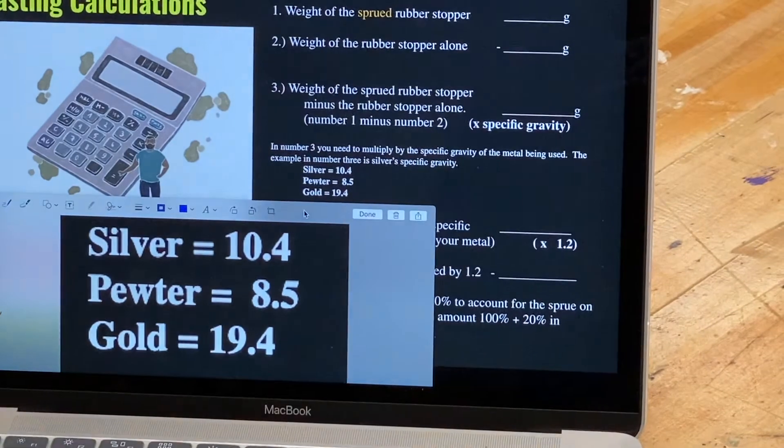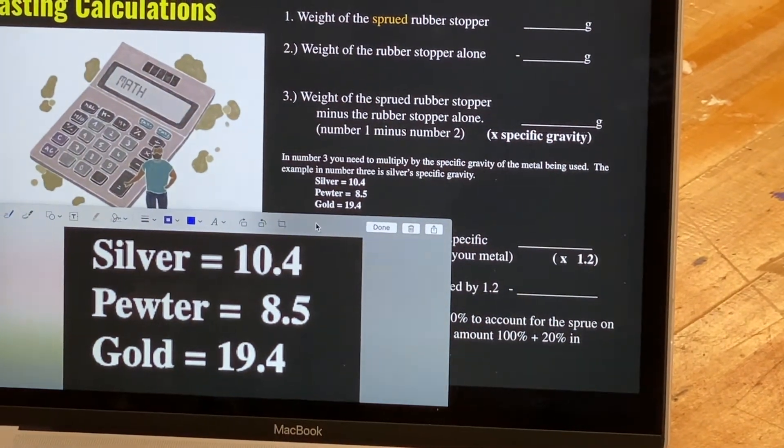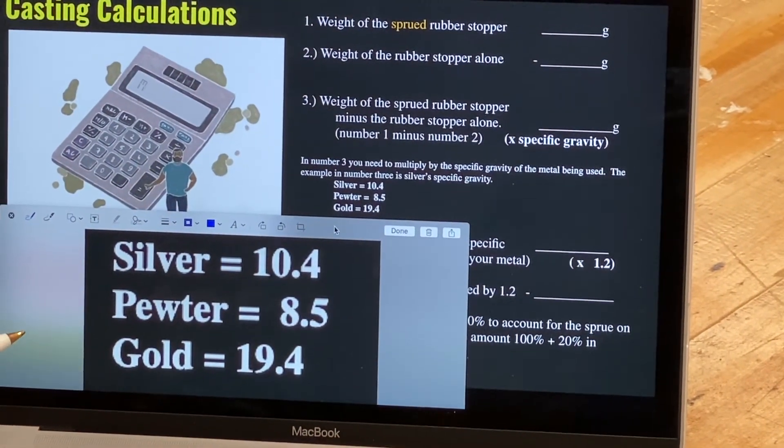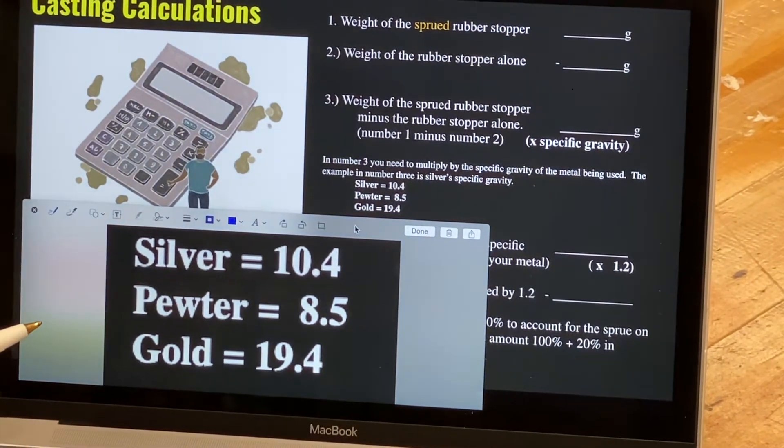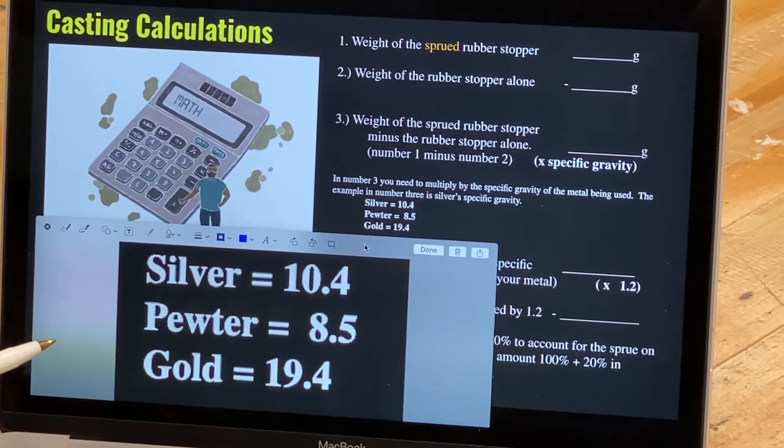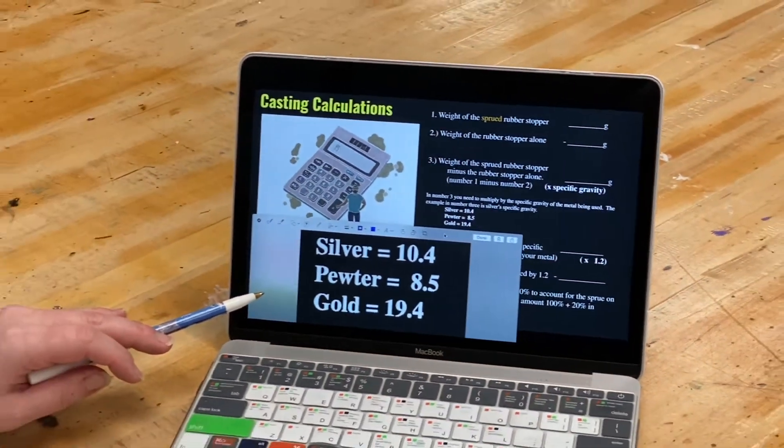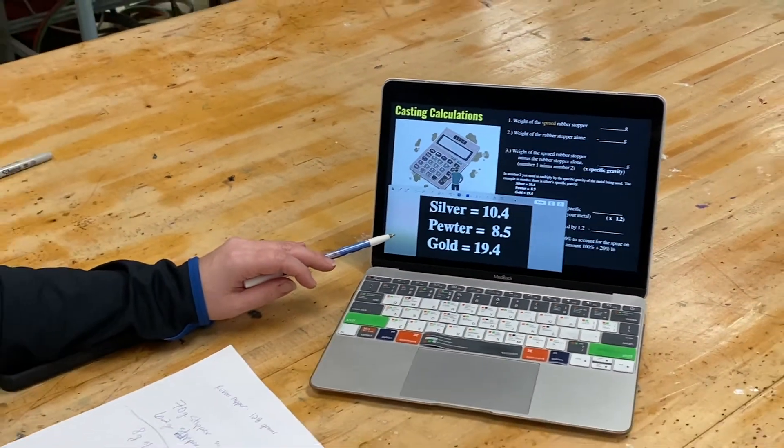In our classroom, we only have availability of casting with silver, pewter, or gold because the other metals take too high a melting point. And we do not have the right equipment for casting those other metals.